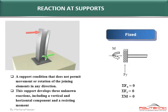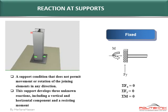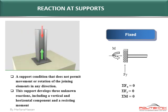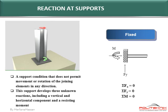The fixed support is a support which does not permit movement or rotation of the joining elements in any direction. This support develops three unknown support reactions, including a vertical and horizontal component, and a resisting moment.